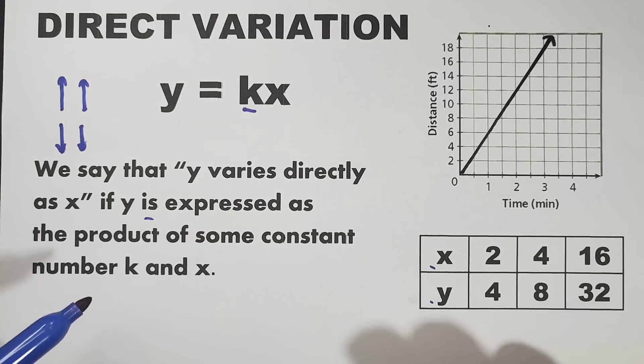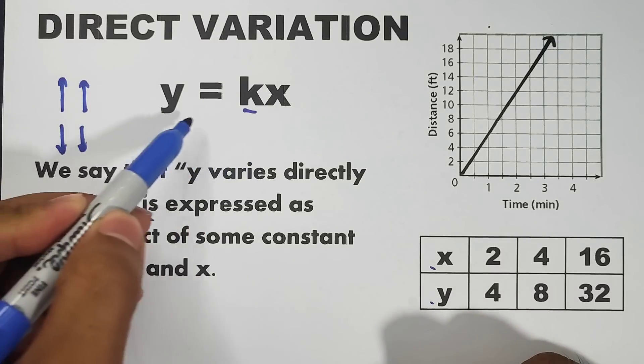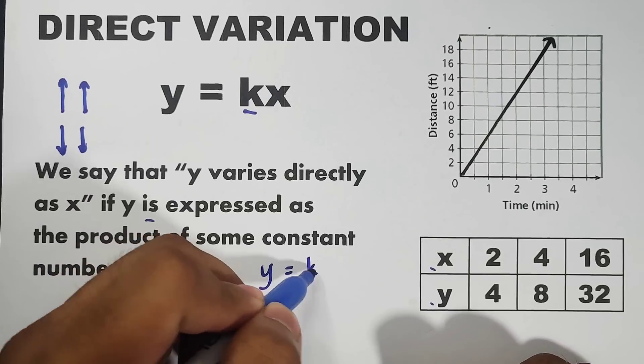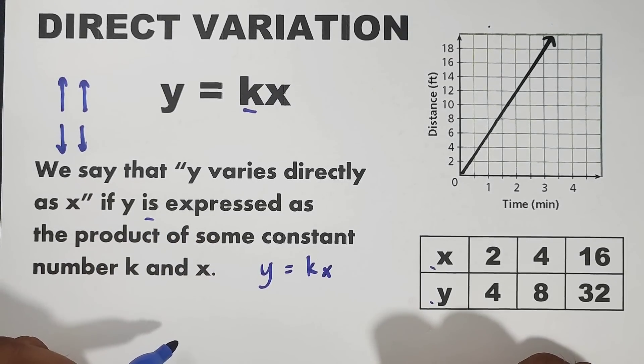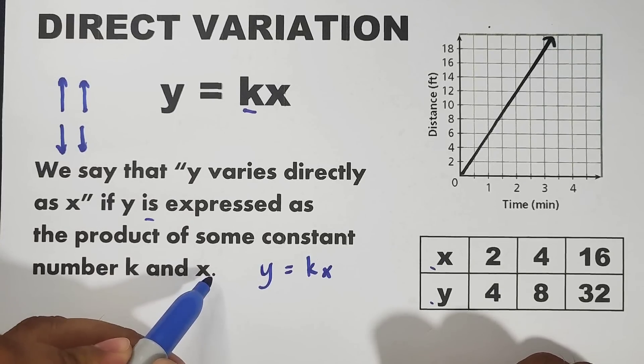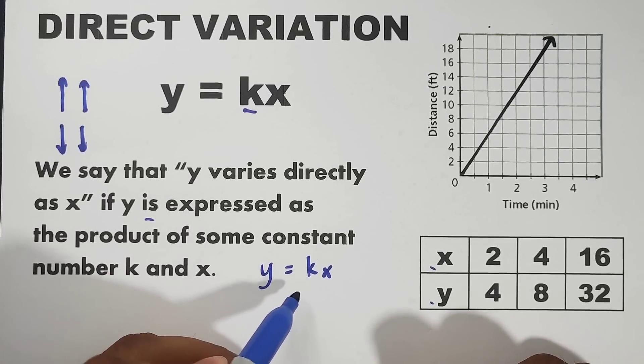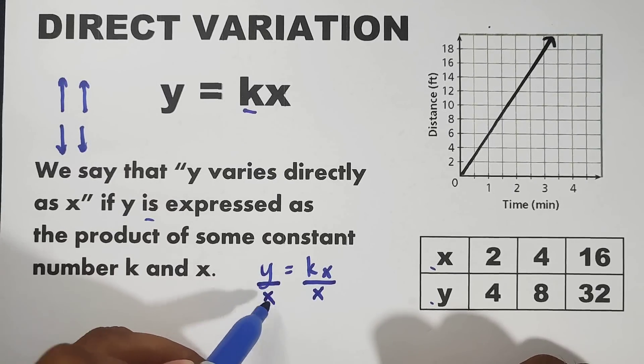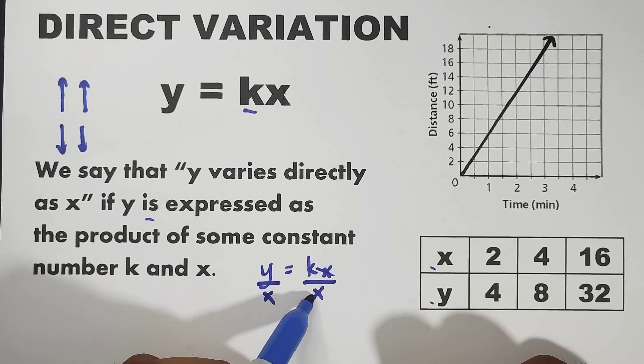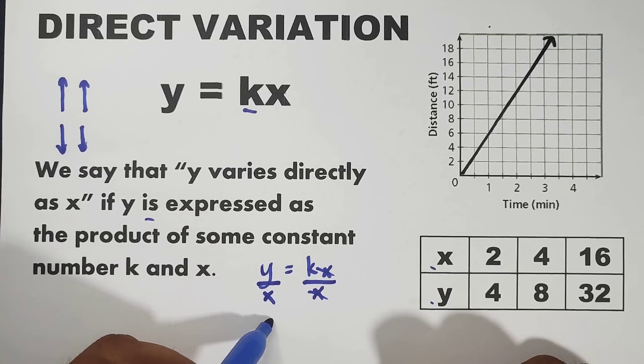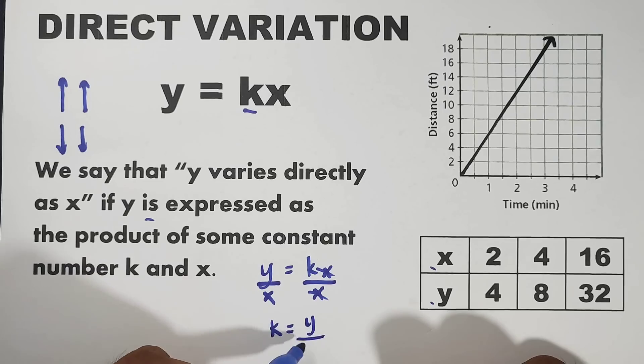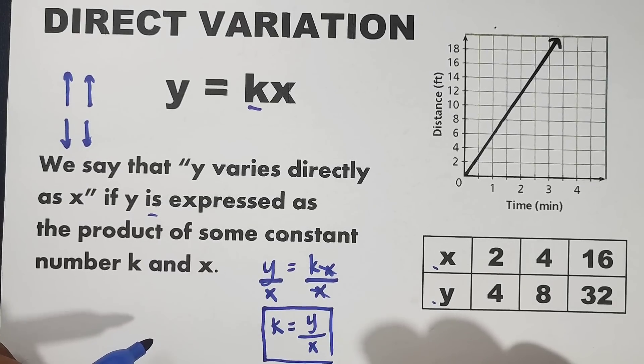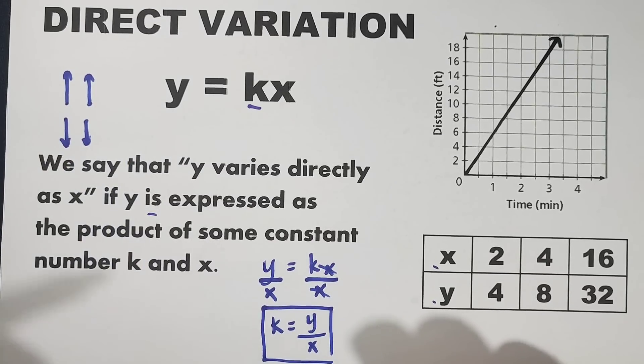So, I want to show you another formula. If this is the general formula for direct variation, y equals kx. We have another formula for getting the constant of variation. The constant of variation can be solved by manipulating this kind of equation. What you need to do is divide both sides of the equation by x. And as you can see, we can cancel this out. And what we have now is k equals y over x. This is the formula for the constant of variation when it comes to direct variation.